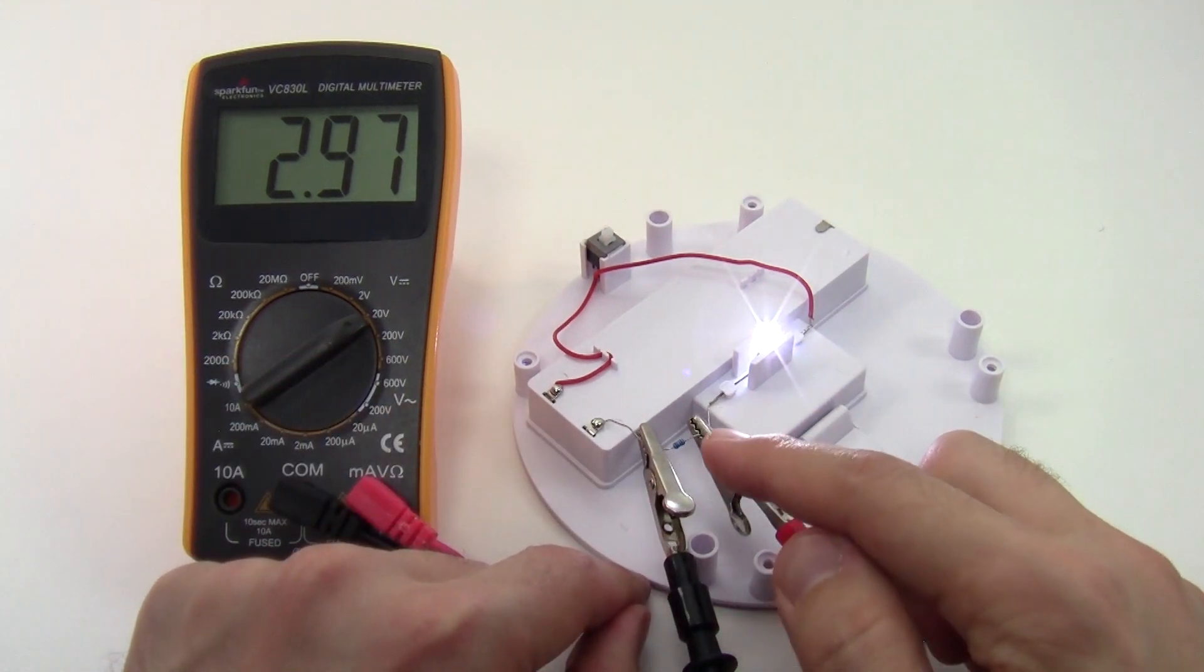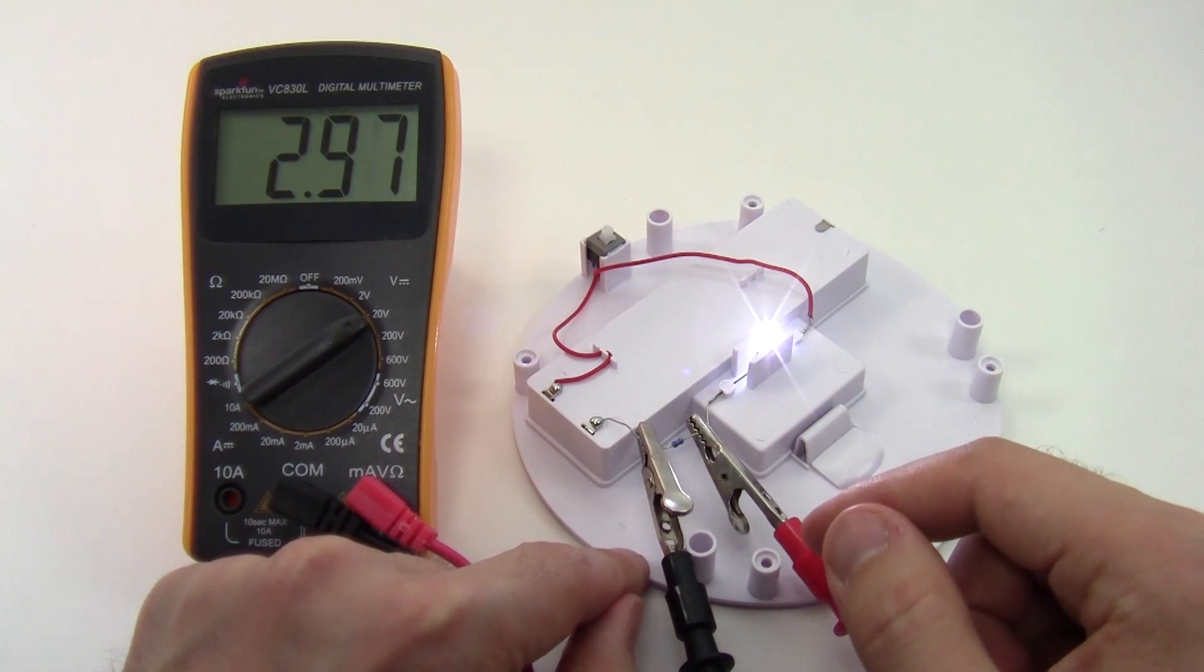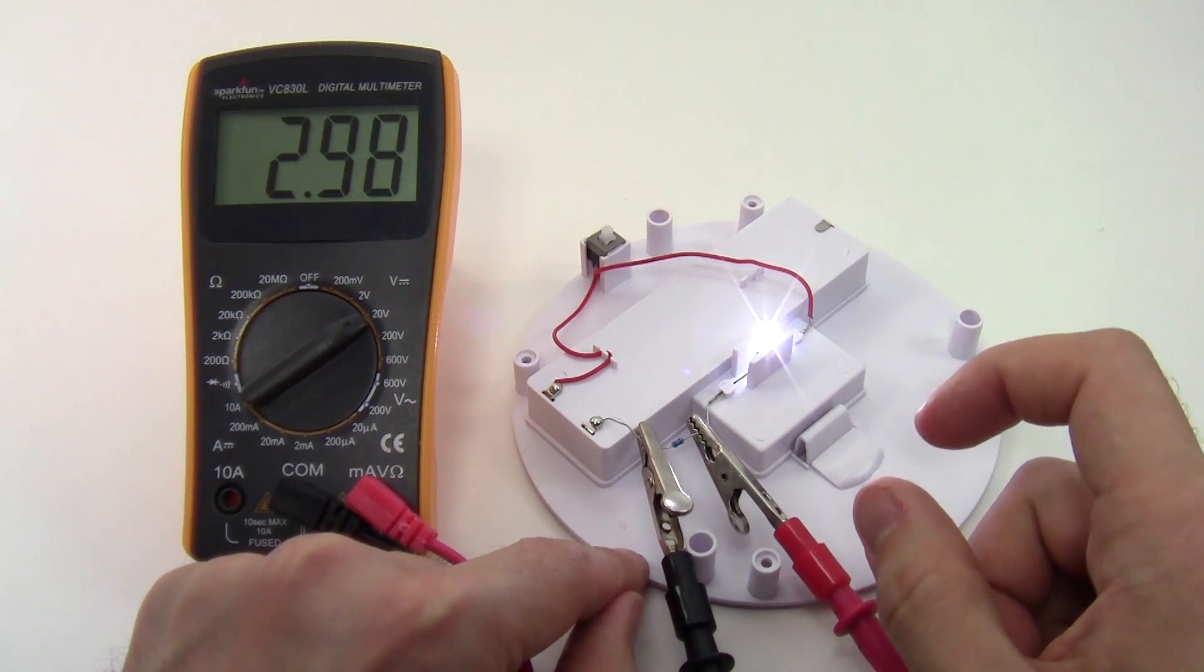So notice that almost half of the voltage is being dropped across the resistor. That's power that's just being dissipated and turned into heat instead of turned into light. So there are a couple different ways that I could add more LEDs to make this circuit brighter.